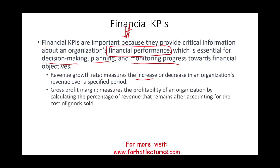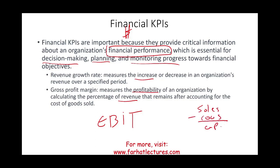We could also look at gross profit margin or earnings before interest and taxes (EBIT). Gross profit measures the profitability of an organization by computing the percentage of revenue that remains after accounting for cost of goods sold — simply put, sales minus cost of goods sold equals gross profit. Gross profit divided by sales gives the gross profit margin, an indicator of how well you are selling and managing your cost of goods sold.